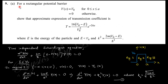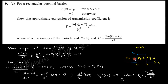Question number 9 says: for a rectangular potential barrier, show that the approximate expression of the transmission coefficient will be as given, where k² equals this expression. This is a quantum mechanics question based on the Schrödinger equation boundary value problem. The time-independent Schrödinger equation applies in three regions. In this potential barrier, the potential is V₀. There is region 1, region 2, and region 3. The particle has energy E which is less than V₀.